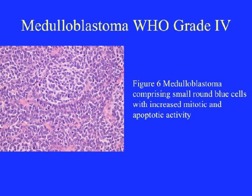This is a medulloblastoma WHO grade 4, typically seen in the posterior fossa of children. It is characterised by sheets of small round blue cells with increased mitotic and apoptotic activity. This tumour is positive for neuronal markers such as synaptophysin and UN, as well as glial markers such as GFAP. There are various subtypes of medulloblastoma, some of which have a better and some a worse prognosis.